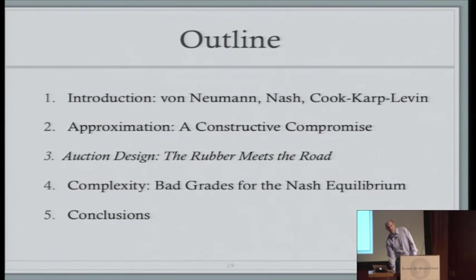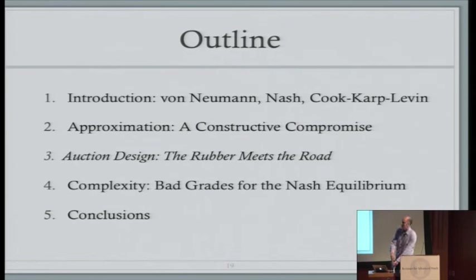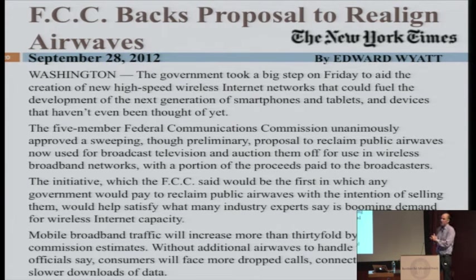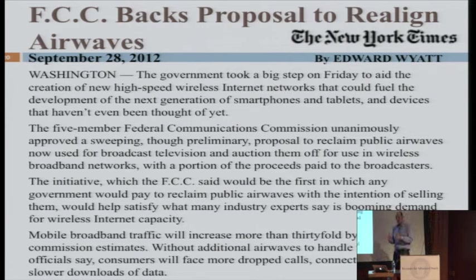For the second application I want to talk about something quite practical — how a novel large-scale auction currently being designed has been influenced by computer science. The story starts in 2012 when Congress passed the Spectrum Act, authorizing the FCC to design and execute a novel type of auction. The goal is to sell wireless spectrum, mostly to telecoms for wireless broadband use. The FCC has been running so-called combinatorial auctions for over 20 years to sell wireless spectrum to the highest bidder.